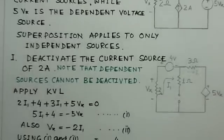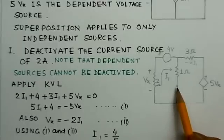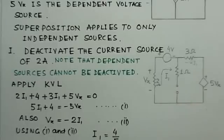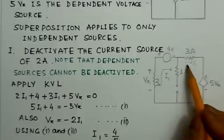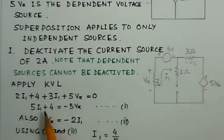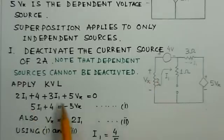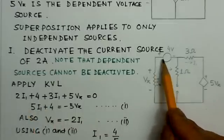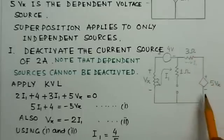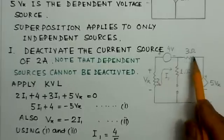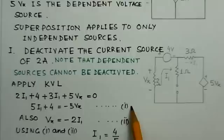From this circuit, after deactivating the current source, the current I1 is flowing in the loop. This current I1 through the 3 ohm resistor we can determine. First we apply KVL to this loop: 2I1 plus 4 volts plus 3I1 plus 5Vx equals 0. This is the KVL applied to this loop. So we can determine 5I1 plus 4 equals minus 5Vx.